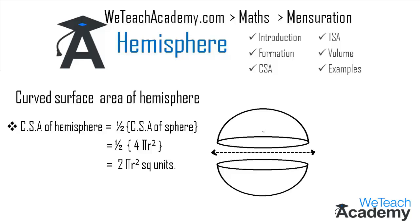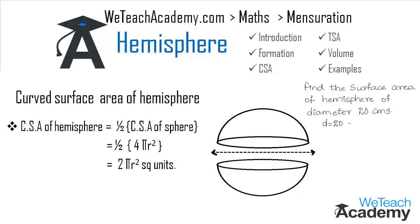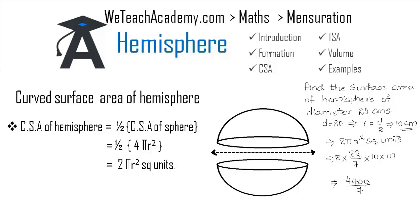Now let us discuss an example. Find the surface area of a hemisphere of diameter 20 centimeters. We are given diameter d = 20, so r = d/2 = 10 cm. Using the formula 2πr², we substitute: 2 × (22/7) × 10² = 2 × (22/7) × 100 = 4400/7, which simplifies to 628 4/7 cm² as the curved surface area of the hemisphere.